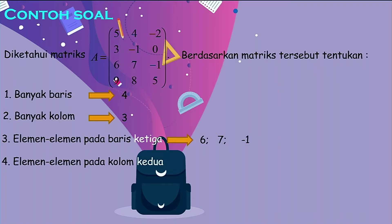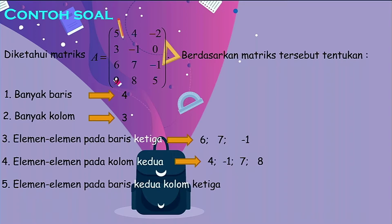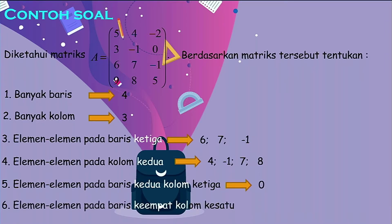Soal keempat, elemen-elemen pada kolom kedua — yang menurun atau vertikal, dibaca dari atas ke bawah. Karena ini kolom pertama, ini kolom kedua, berarti elemen-elemennya ada angka 4, negatif 1, 7, dan 8. Sedangkan elemen pada baris kedua kolom ketiga: baris kedua, kolom ketiga, nilainya adalah 0. Elemen pada baris keempat kolom pertama, nilainya adalah 9.